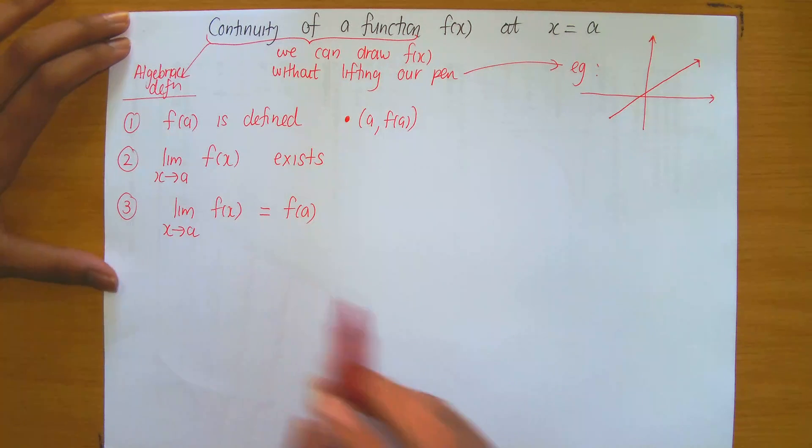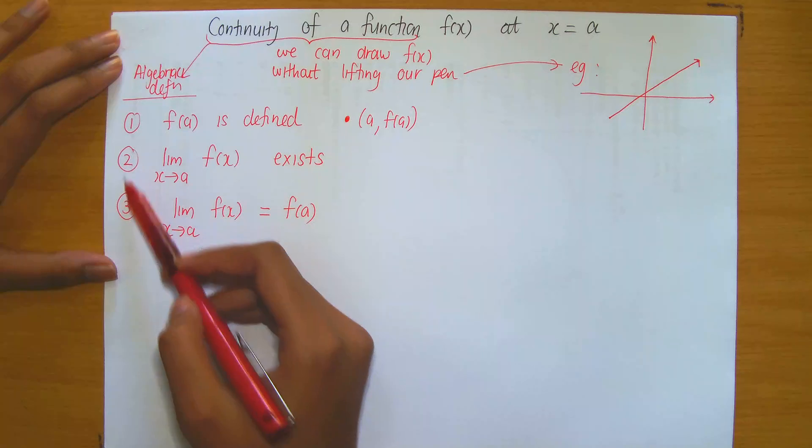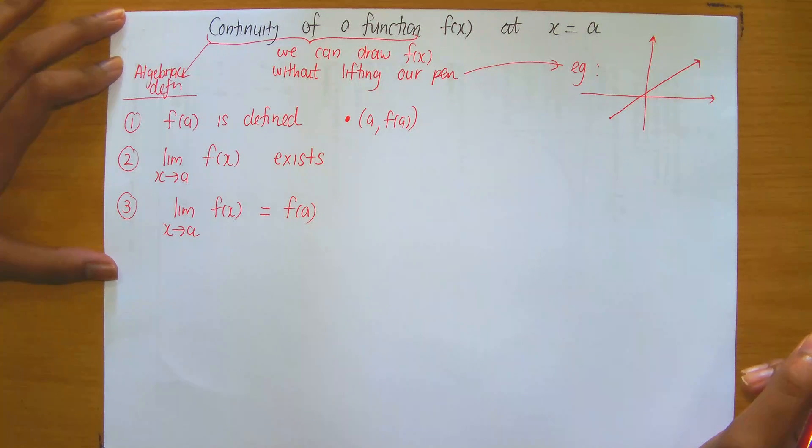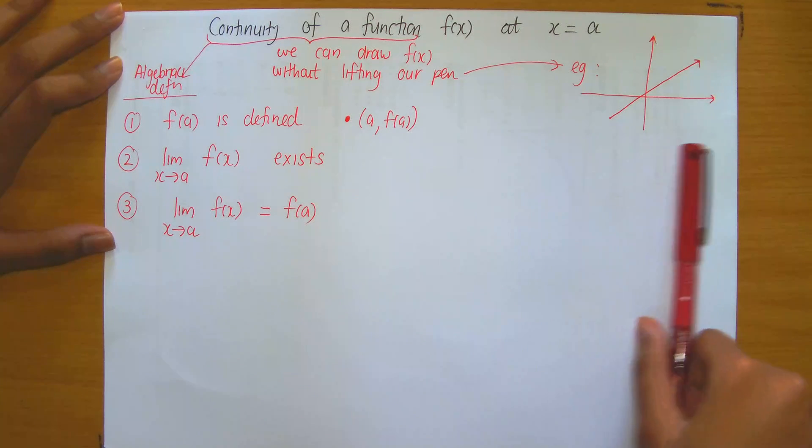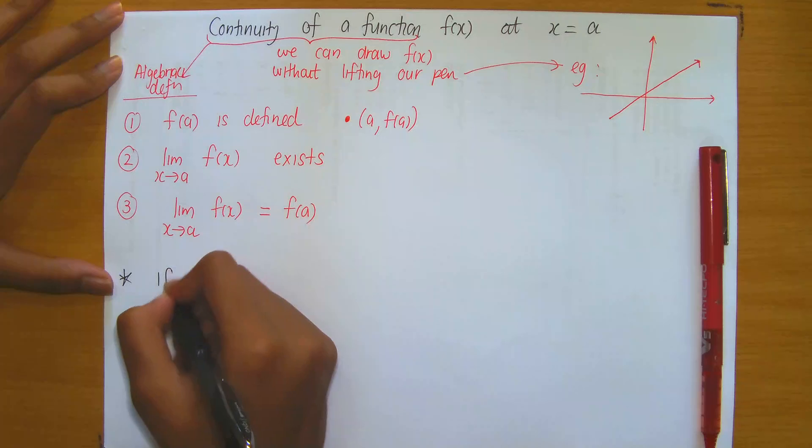If only one, if one or more of one, two or three are not satisfied, then we say that it's not continuous at x equals a. And the term for that is called discontinuous.